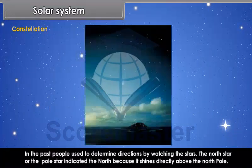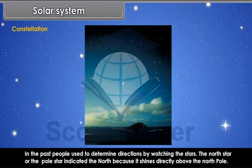In the past, people used to determine directions by watching the stars. The North Star or the Pole Star indicated the North because it shines directly above the North Pole. It remains in the same direction in the sky throughout the year.